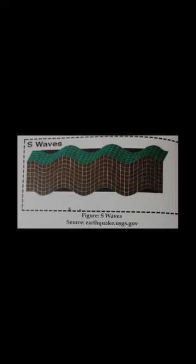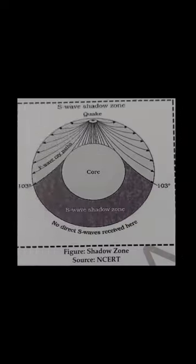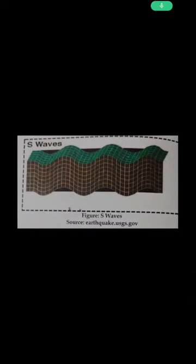Differences between P waves and S waves: P waves are the first wave to hit the surface; S waves arrive after P waves. P waves travel in the speed range of 1.5 to 13 km per second. S waves are almost 1.7 times slower than P waves. P waves can travel through solid, liquid, and gas. S waves travel through only solids.